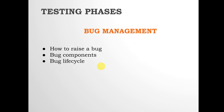Next is bug management. Here you define how bugs will be raised, any naming structure, how bug components are assigned, which team the bug is raised to, and what the bug lifecycle looks like. Tools used for bug management include Bugzilla, JIRA, HP QC / HP ALM, and Mantis.